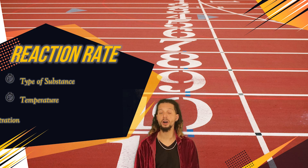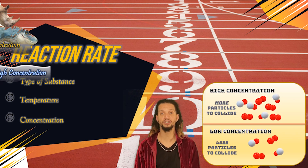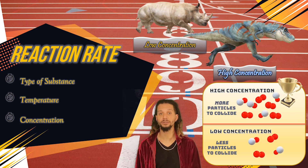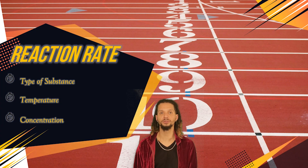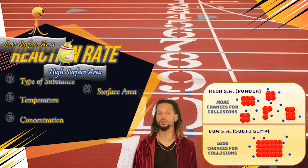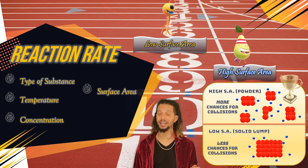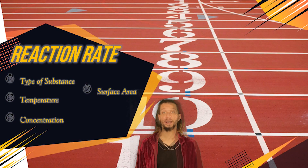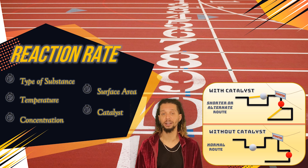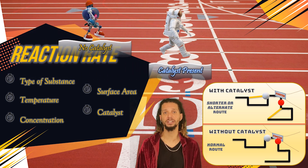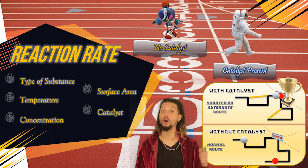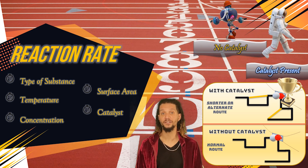When you increase the number of particles in a given volume — in other words, you increase the concentration of the substance — there will be more substances to collide, leading to more collisions and an increased rate of reaction. As the surface area of a substance increases, like when you take a solid lump and crush it into powder, you are allowing more particles to interact with each other, which makes the reaction rate go faster. The final factor affecting reaction rate is a catalyst, which is a substance that remains unchanged by a reaction, but when added provides a boost by allowing substances to interact through alternate or shorter pathways, thus leading to a faster reaction.